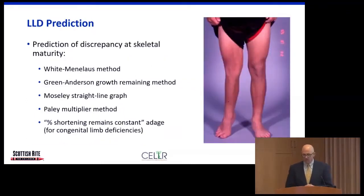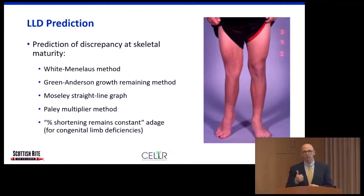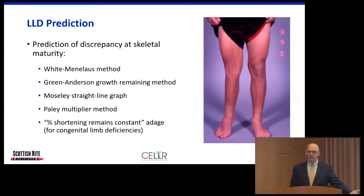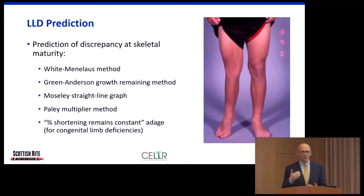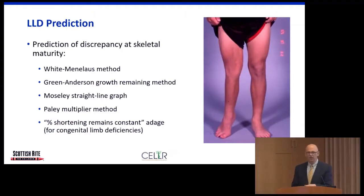Predicting the limb length discrepancy at skeletal maturity is really the most important thing we do, because that's what families want to know: will this one centimeter difference stay the same or get worse? The answer has a significant effect on what we recommend over the years of growth. There are different methods for making this prediction, and I'll touch on each briefly.